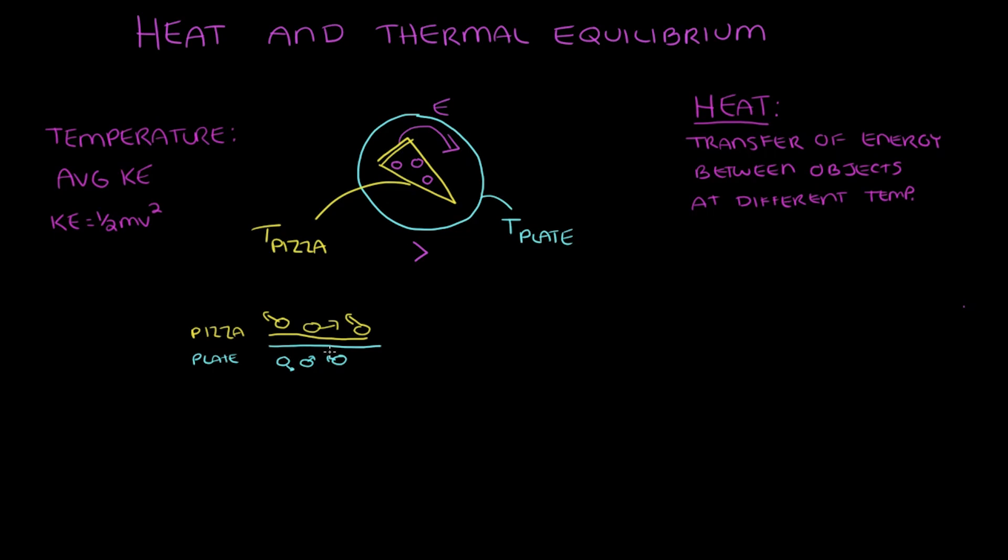When you put the slice of pizza on the plate, the particles at the surface of the objects will come into contact. So let's look at what happens when these faster particles from the pizza collide with the slower particles on the surface of the plate. When the particles collide, kinetic energy transfers between the particles. Since the hotter object's particles, in this case the pizza, have more energy, they're able to give some of that energy to the colder object's particles, which is why heat always transfers from the hotter object to the colder object.